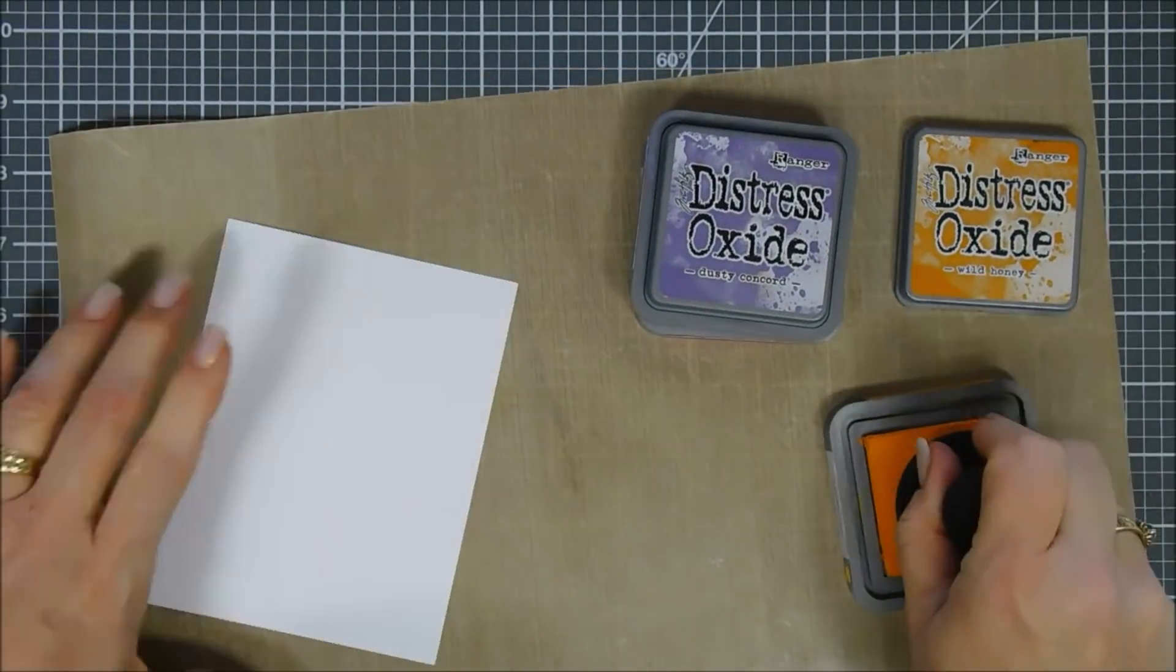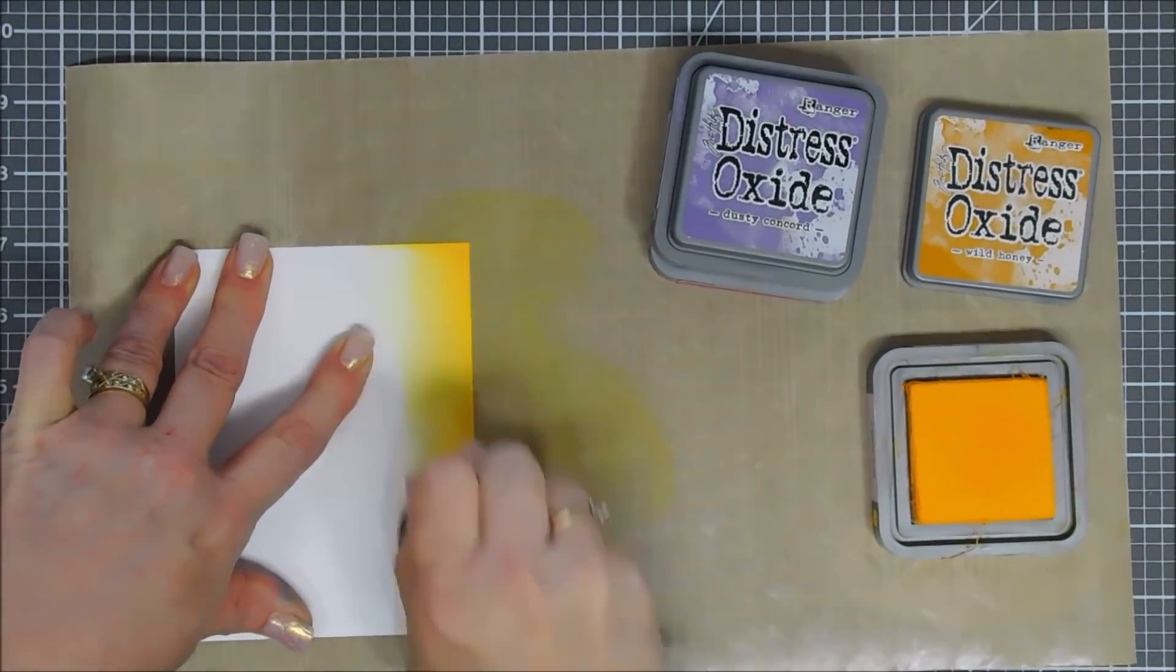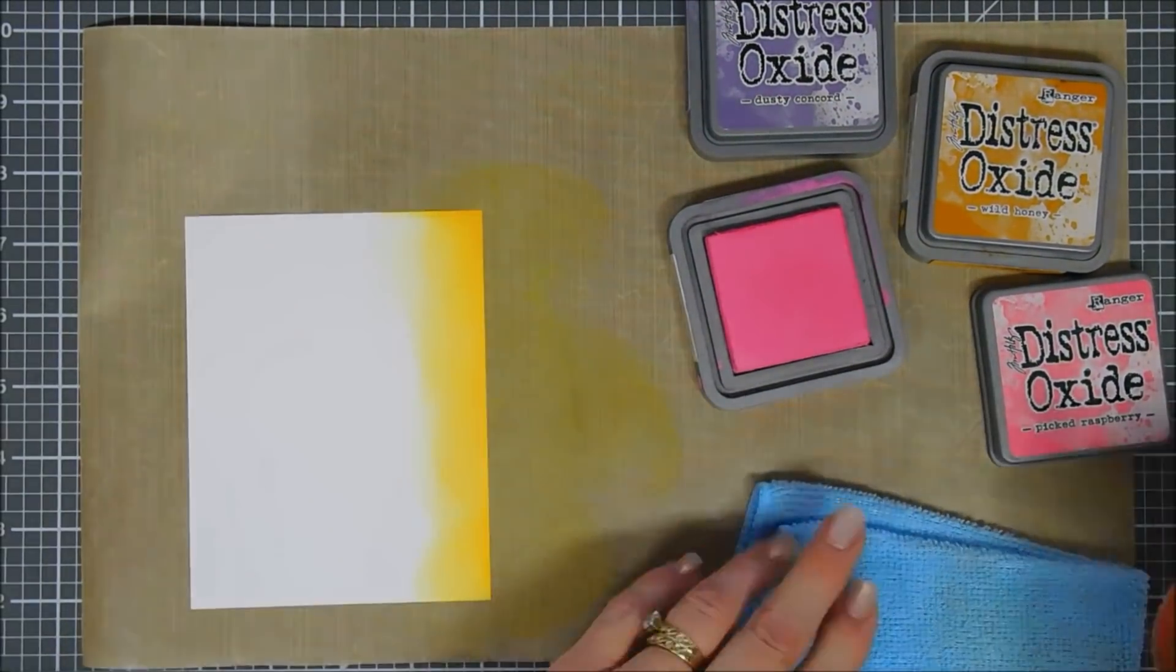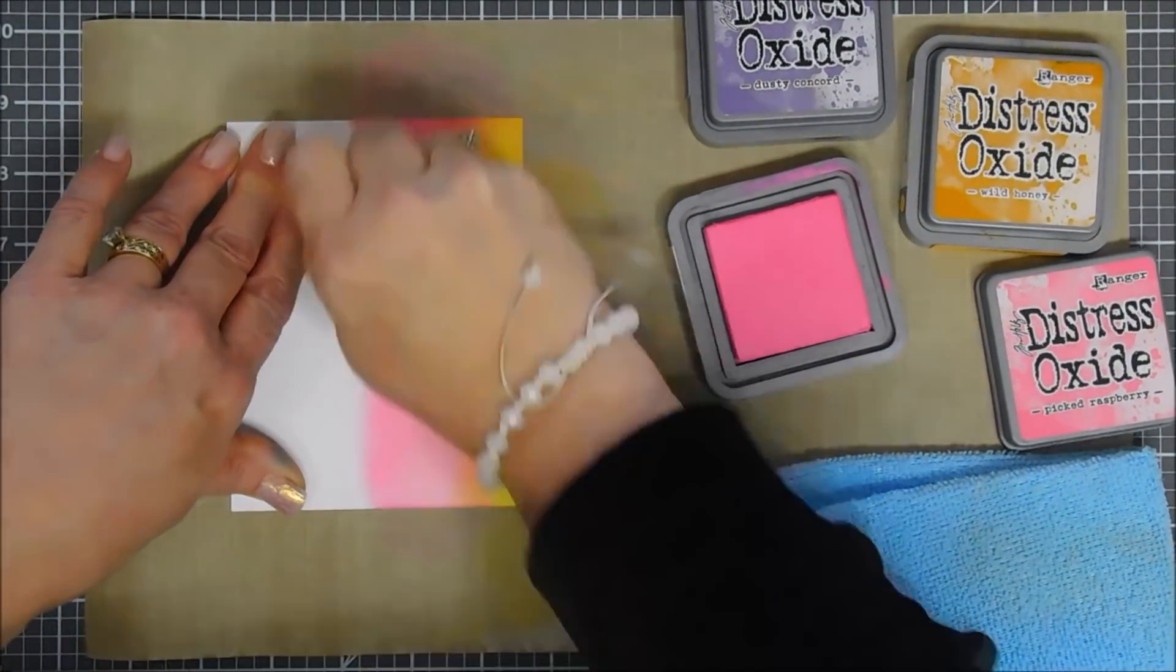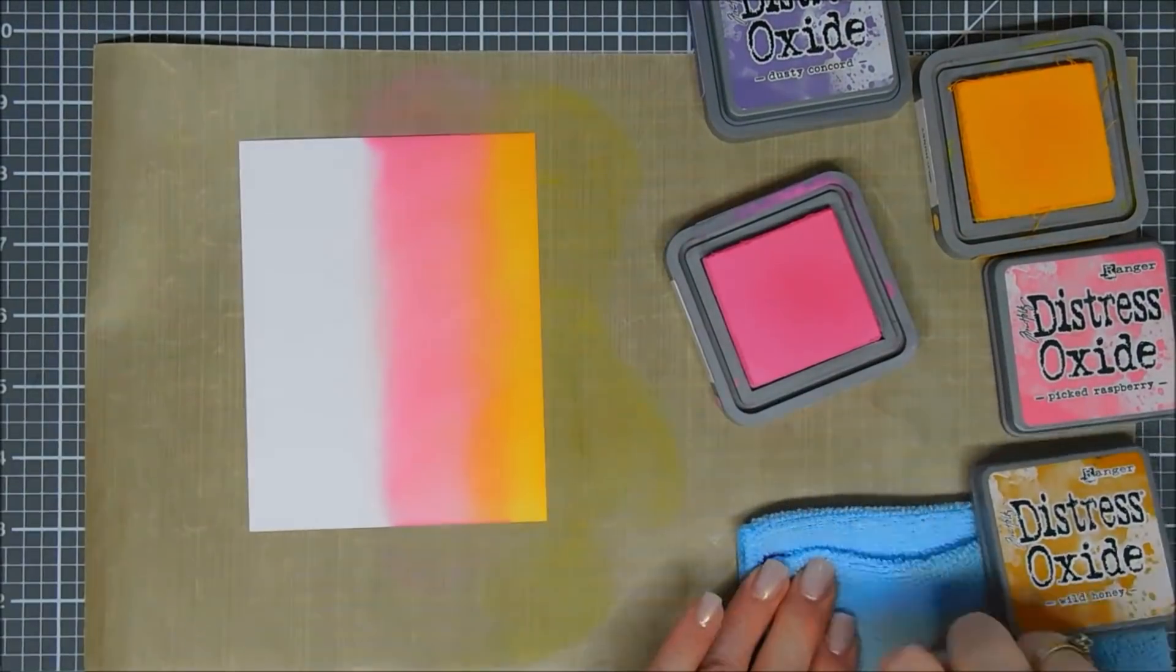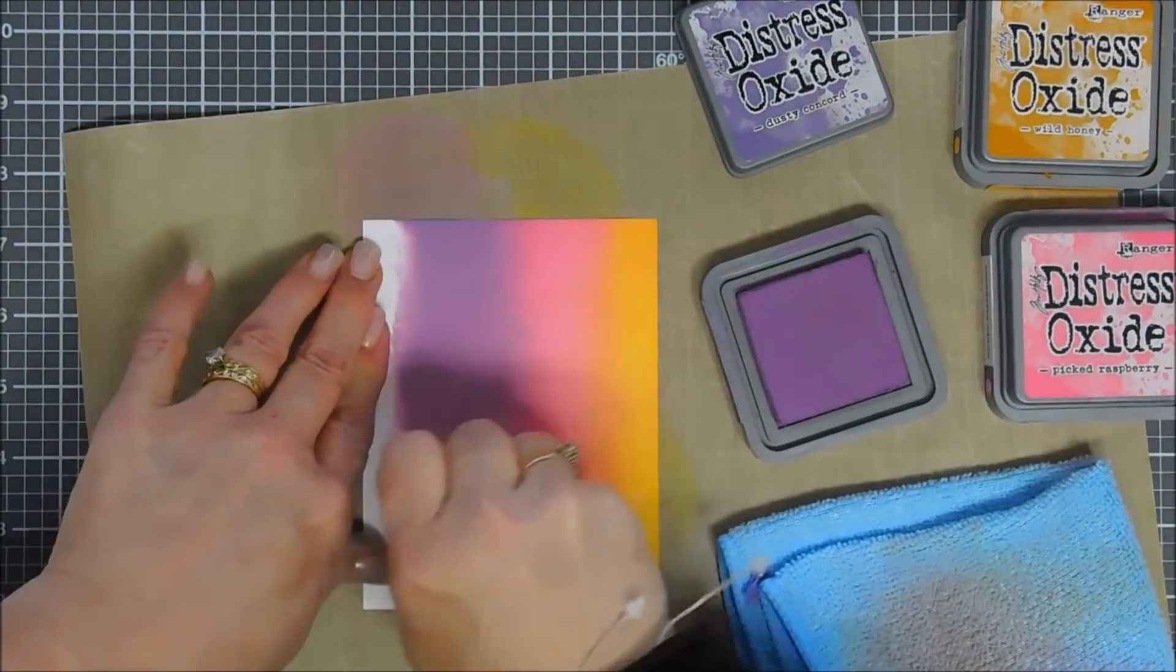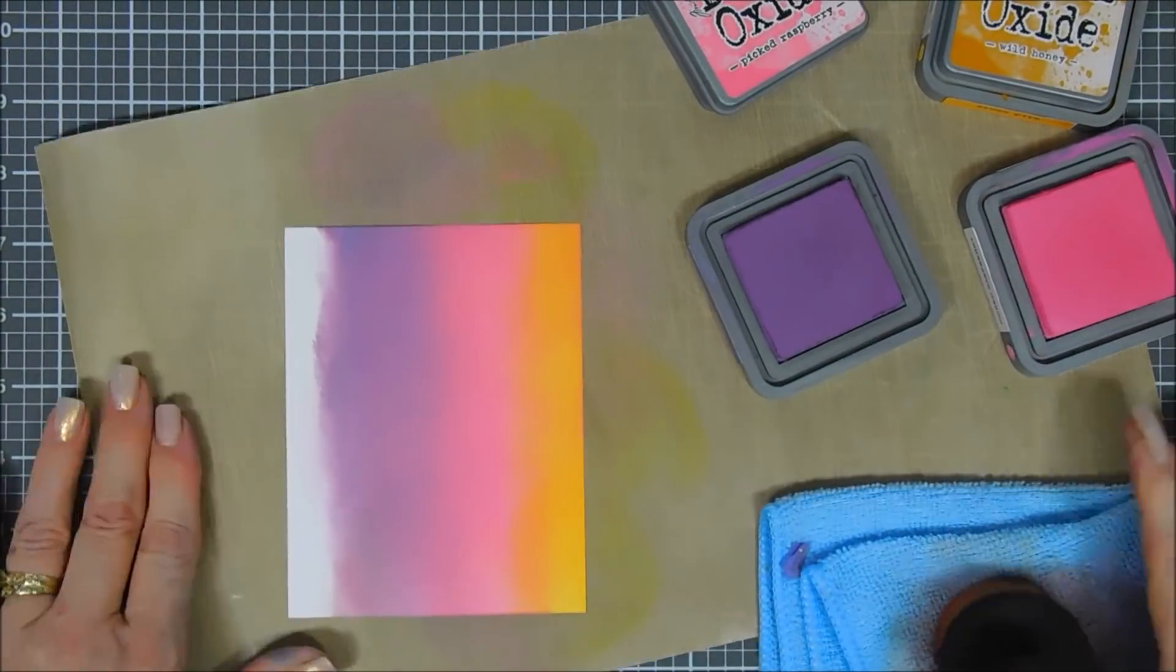We're going to start off with wild honey, just ink blending on the very bottom of our card base here. Actually it's not our card base, sorry it's just a panel. After we have our wild honey down we're going to go ahead clean up our brush here and add our picked raspberry. Just blending both of these together. I thought these were bright and vibrant colors kind of go with the artsy look. After we have our picked raspberry down we're going to go ahead and blend in our dusty concord. And I didn't go all the way to the top because we're going to actually trim this panel down.